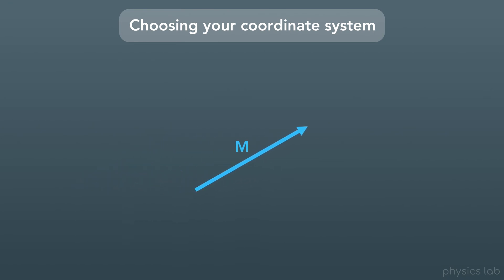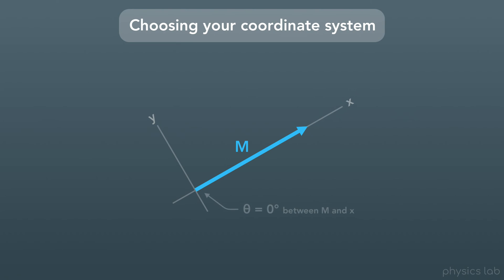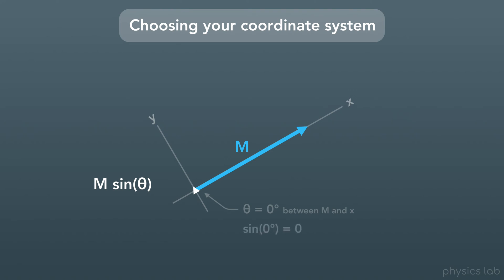So what if we oriented our coordinate system so that the x axis was pointing along the vector? Well now, the component along the x axis is the same length as the vector itself, because the vector is already parallel to the x axis. And the y component for this vector would actually be zero — no amount of this vector is pointing along the y direction. The trig functions still work here. If theta was the angle between vector m and the x axis, then theta would be zero degrees. The x component would be m times the cosine of theta, but since the cosine of zero degrees is one, the x component would just be m. And the y component is m times the sine of theta, but since the sine of zero degrees is zero, the y component would just be zero.